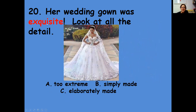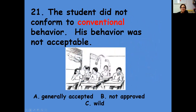Number twenty: her wedding gown was exquisite — look at all the detail. Is it too extreme, simply made, or elaborately made? And finally, the student did not conform to conventional behavior — his behavior was not acceptable. So 'conventional' behavior must be acceptable behavior, generally accepted.